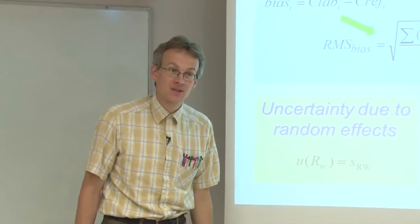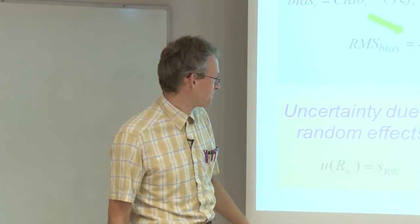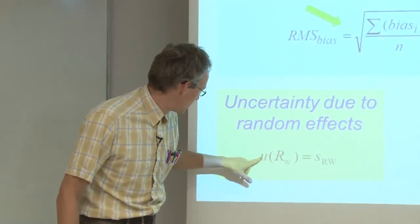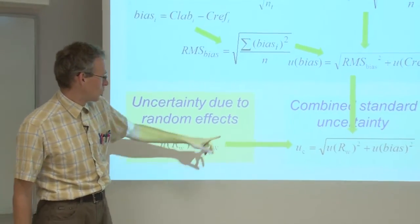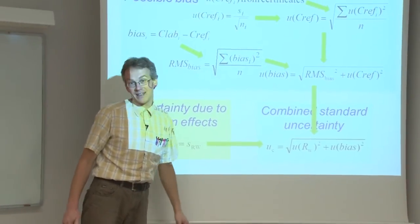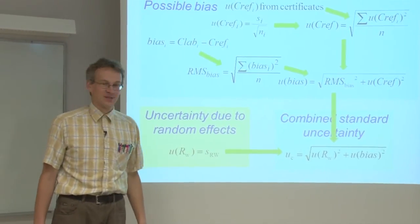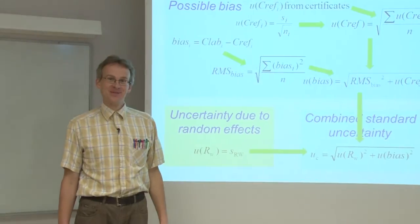Several months or preferably one year. And when we have found this URW and when we have U bias, then these two we can eventually combine into the combined standard uncertainty of the result. Not too difficult.